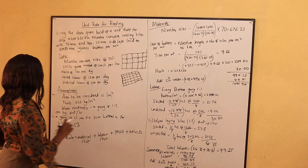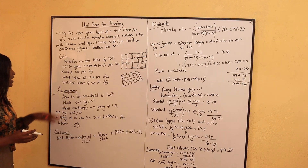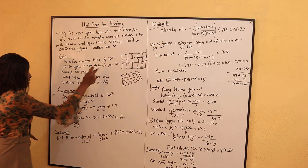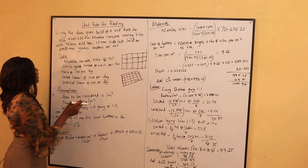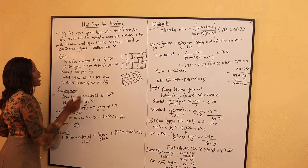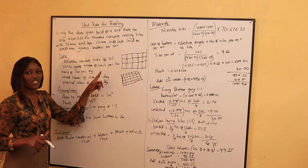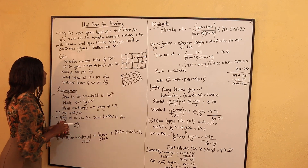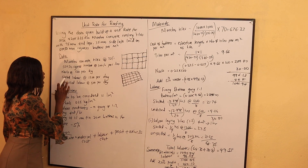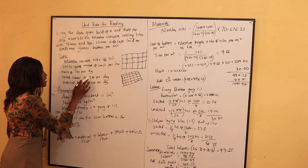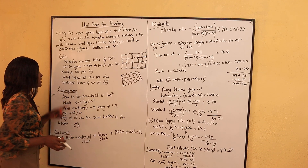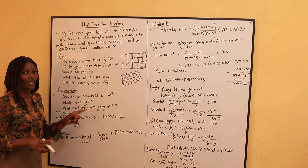The data given is: one Mareba concrete tile costs 70 shillings. The 50 by 50 cypress button is 100 shillings per linear meter. Nails are 120 shillings per kg. Skilled labor is 1,200 shillings per day, and unskilled labor is 500 shillings per day.